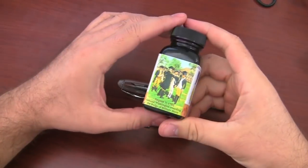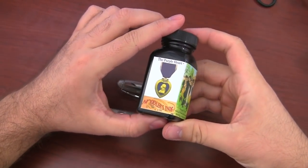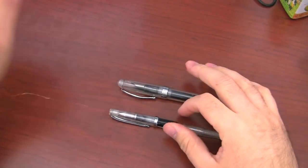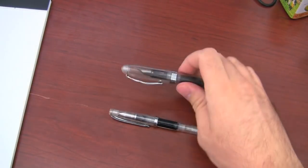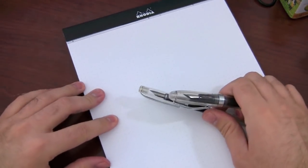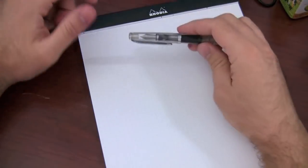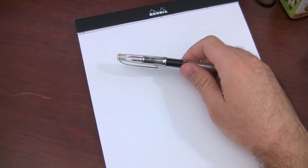So I inked up both pens with our Goulet exclusive Noodler's Purple Heart. This is an ink that we designed with Nathan, and it works pretty well on a Flex Pen. It's a lubricated ink. It has pretty good shading, and I personally like it a lot. Of course, because I designed it, but anyway, so I thought it would be a pretty good ink to use.